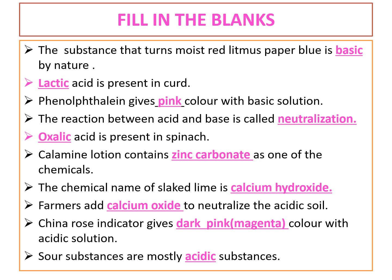Calamine lotion contains zinc carbonate as one of its chemicals. Next, the chemical name of slaked lime is calcium hydroxide. Next, farmers add calcium oxide to neutralize the acidic soil. The soil having more acid content — to neutralize the acid content, we add calcium oxide to the soil.